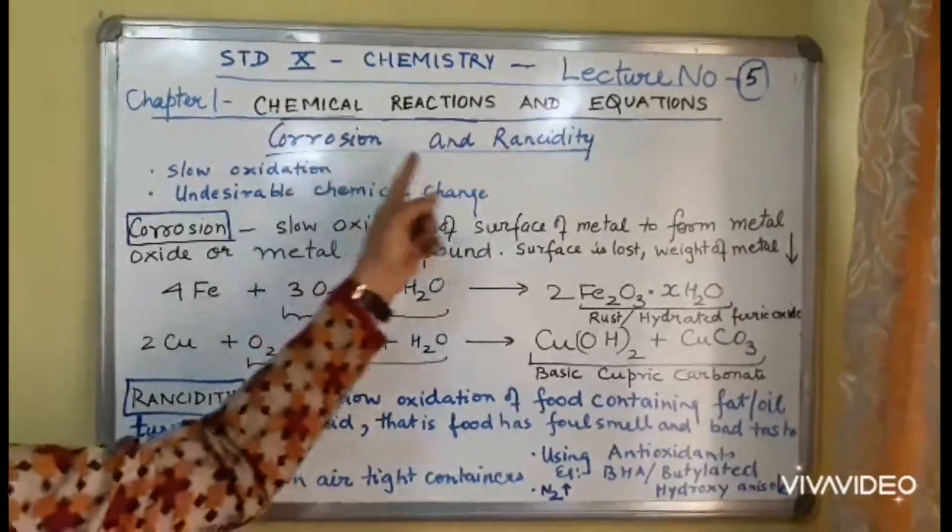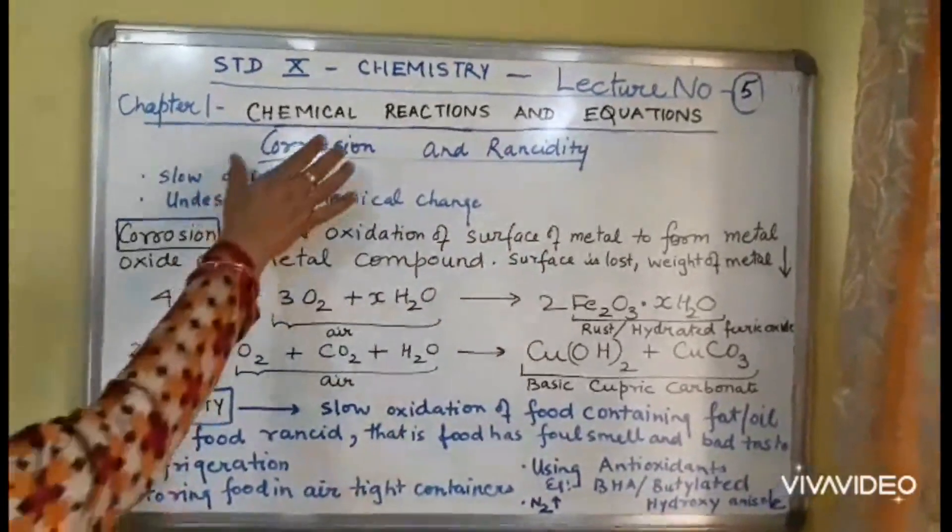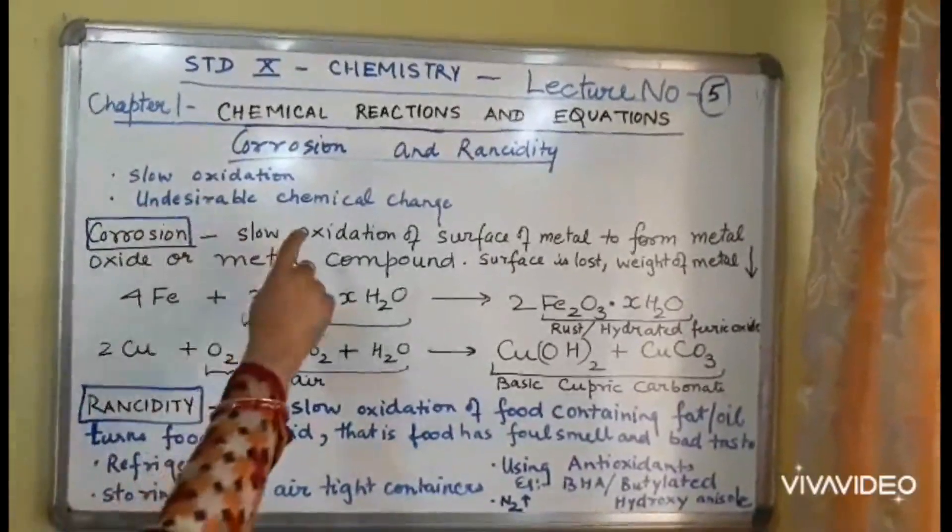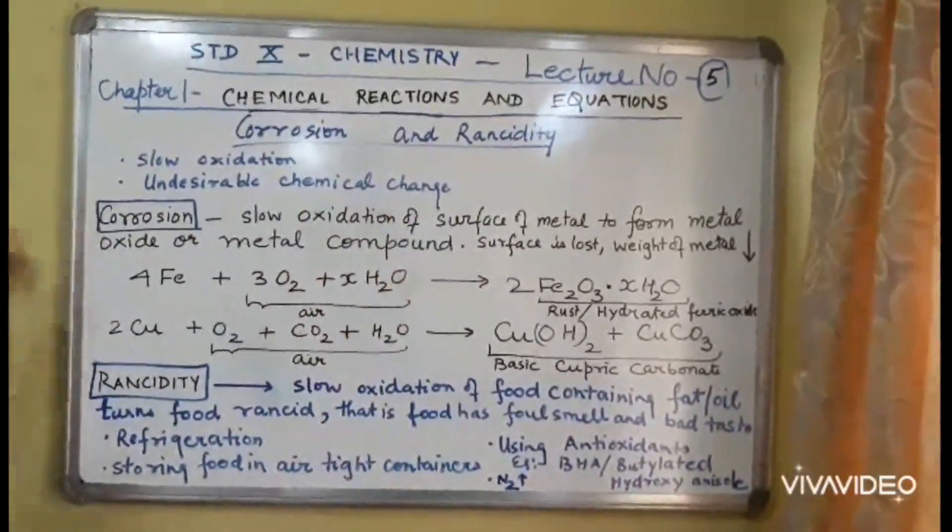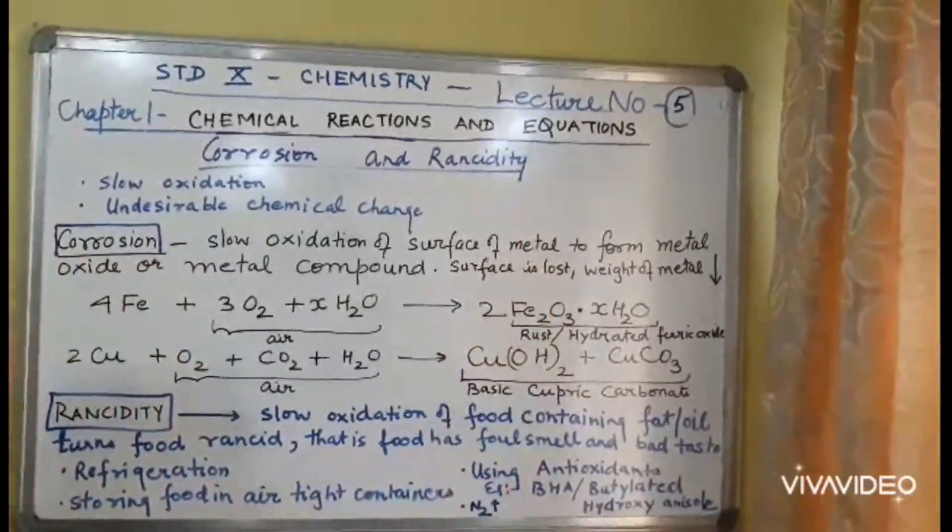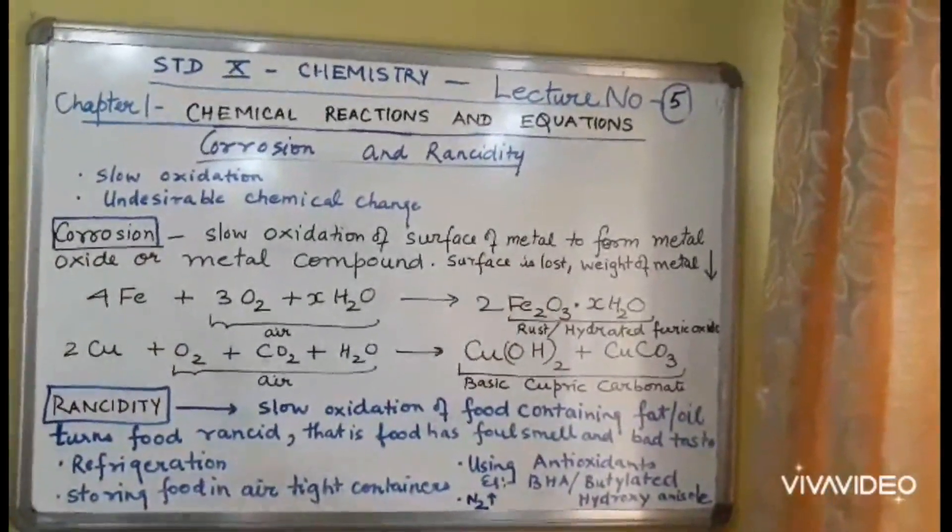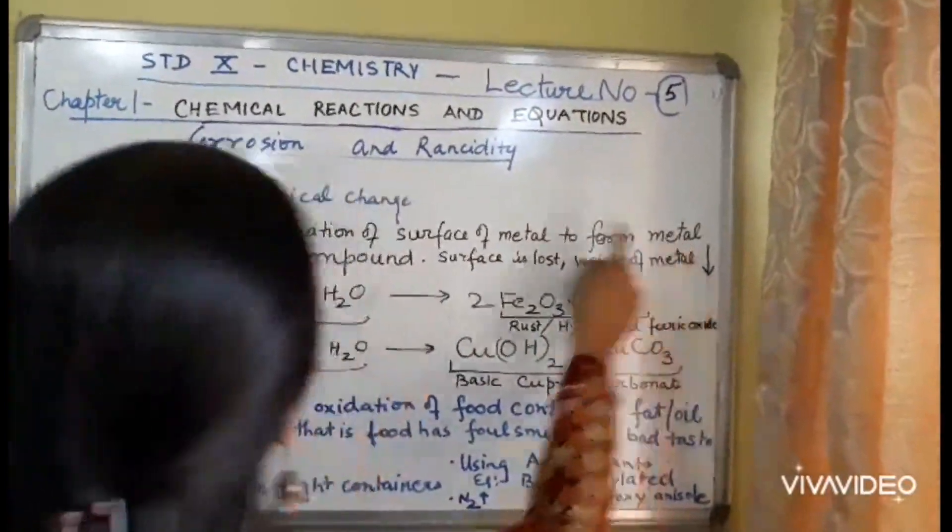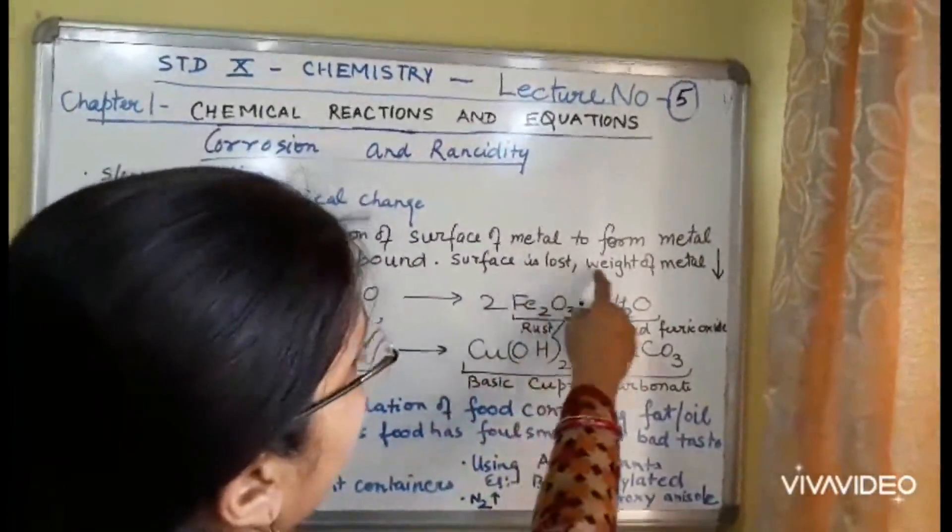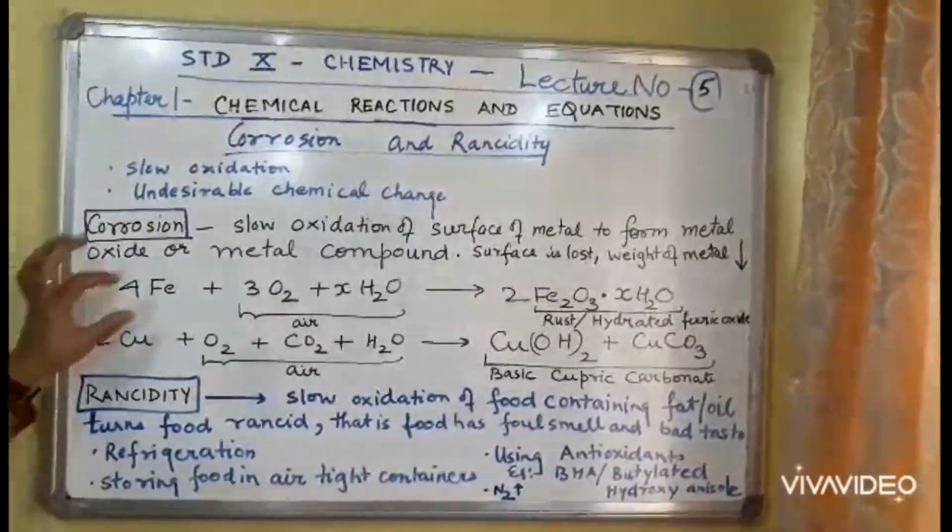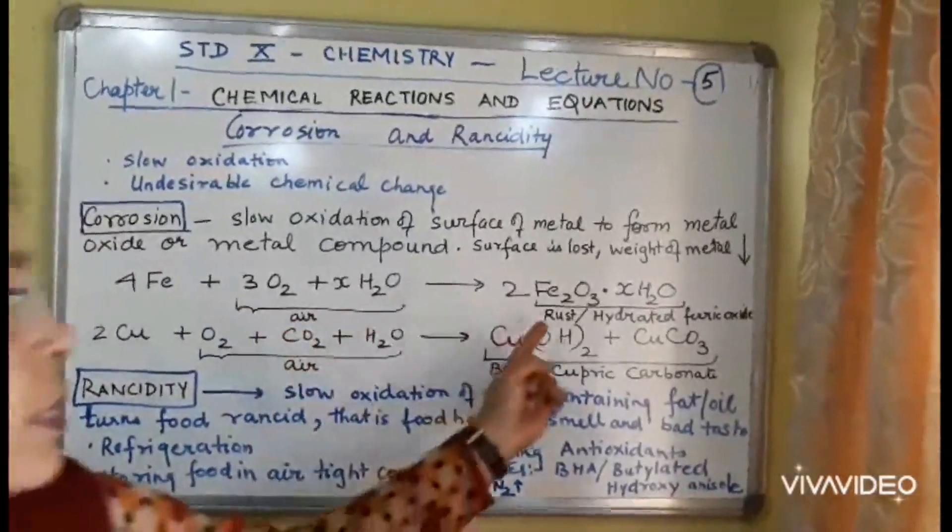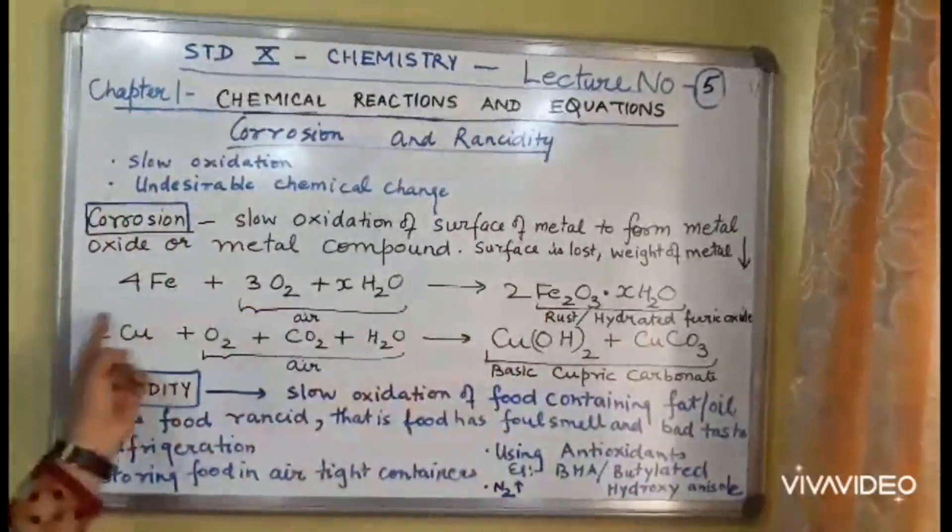I hope this is clear. Corrosion and rancidity. Both of them are slow oxidation reactions. They are undesirable changes, chemical changes. Corrosion. Corrosion is the slow oxidation of surface of metal. Metals such as copper, it can be silver, it can be iron, aluminium to form metal oxide or some other metal compound. Surface is lost and the weight of metal reduces. For example, iron, when it reacts with oxygen and moisture present in air, it forms rust. Hydrated ferric oxide, it is the balanced equation.